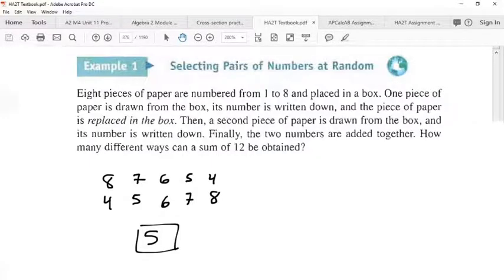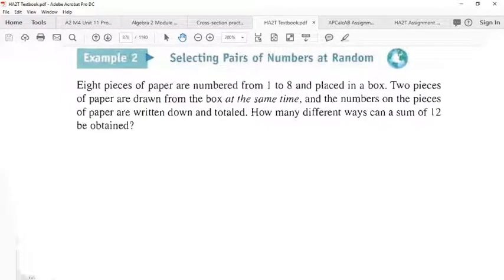Here we have the same problem, except it says two pieces of paper are drawn from the box at the same time. So this is almost like without replacement. And the numbers on pieces of paper are written down and totaled. How many different ways can that sum be obtained?